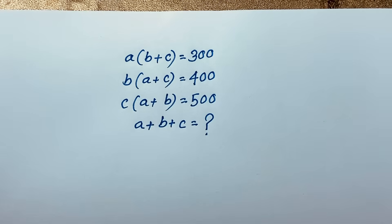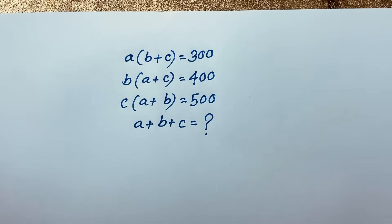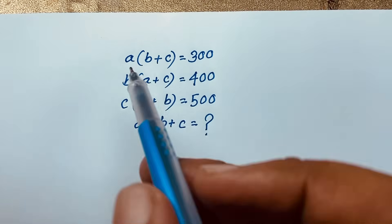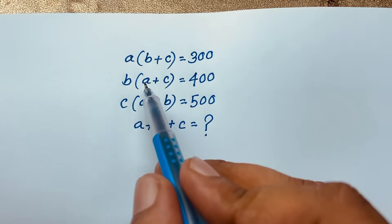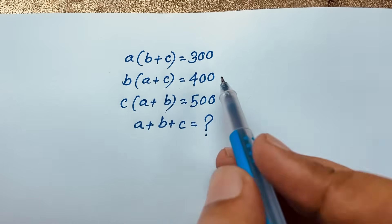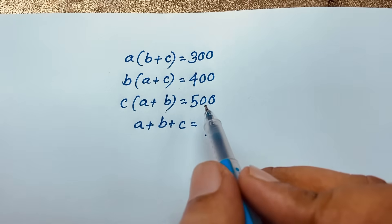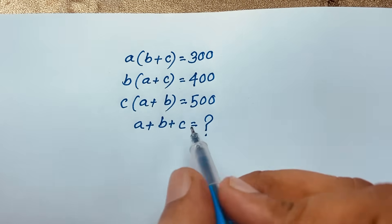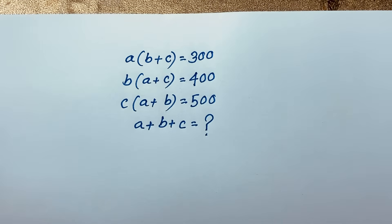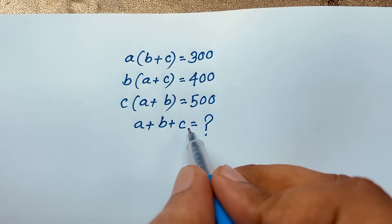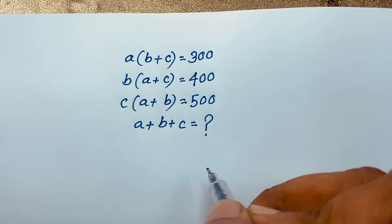Hello everyone, welcome to Rachel's Classroom. Today we have a nice math problem: a times (b+c) is equal to 300, b times (a+c) is equal to 400, c times (a+b) is equal to 500. We'll find out what is the value of a plus b plus c.